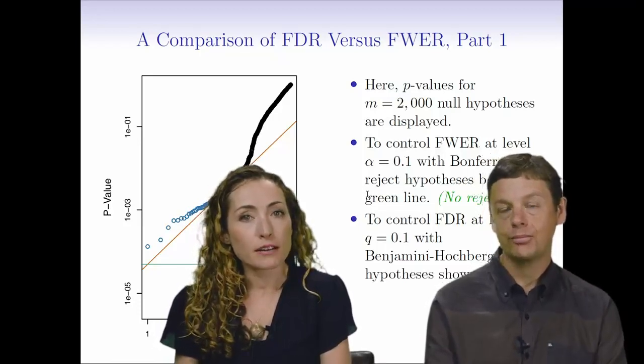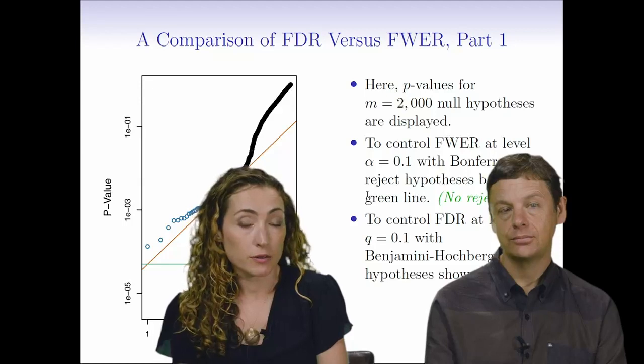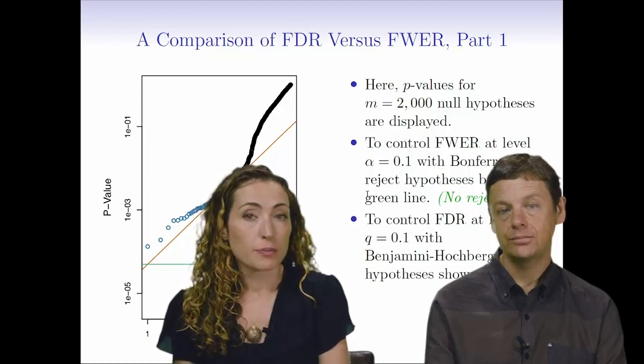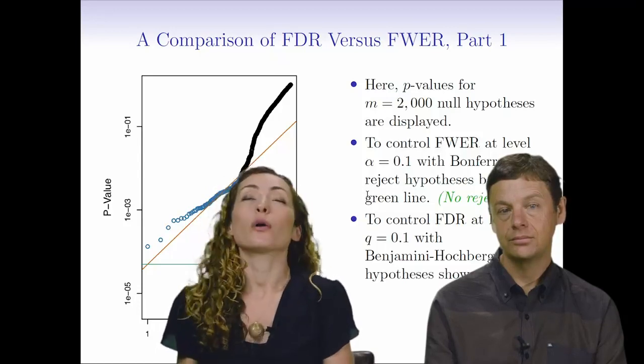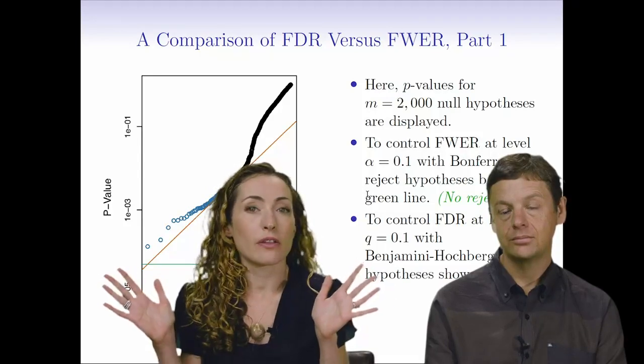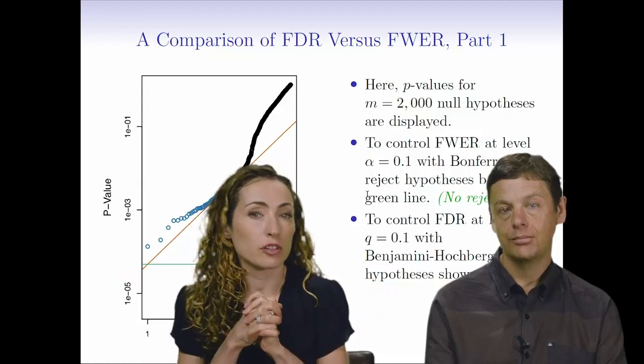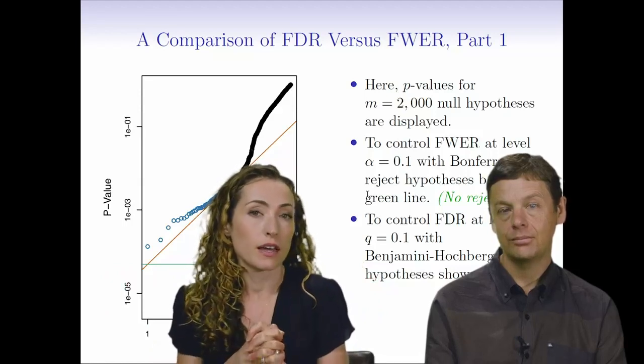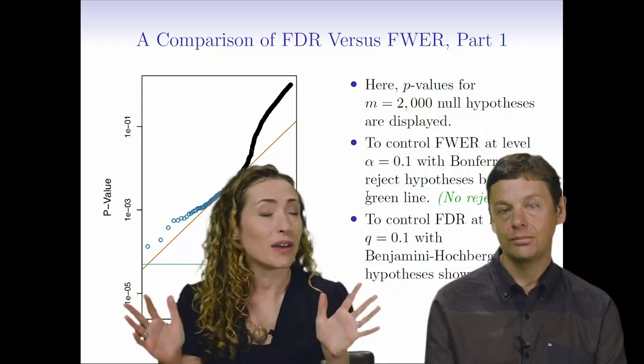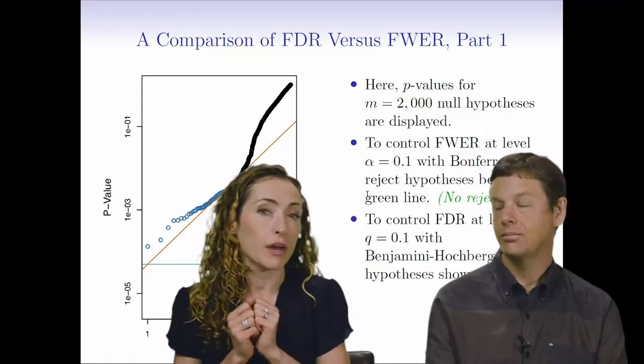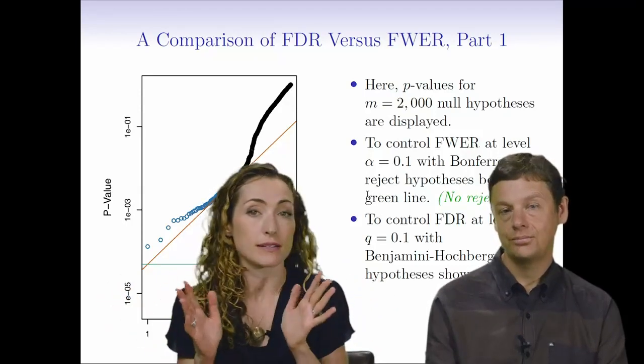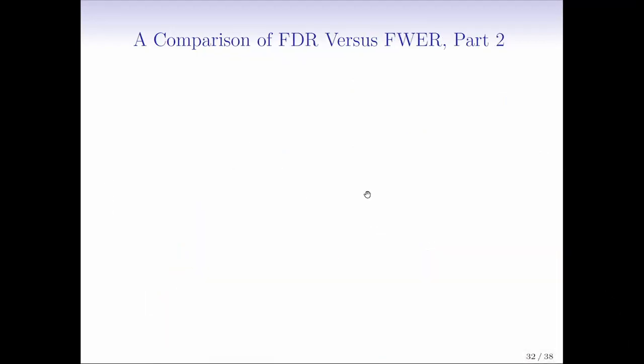But remember, FDR, it seems like a win because it allowed us to reject a lot more null hypotheses. But the guarantees that we're getting are really different. So again, with the family-wise error rate, we're saying we're not willing to make any mistakes. Or rather, we want no more than a 10% chance of having any false positives. And with FDR, I'm like, hey, false positives are fine. I'm cool with false positives. Please just don't give me too many. I don't want more than 10% of my discoveries to be false.